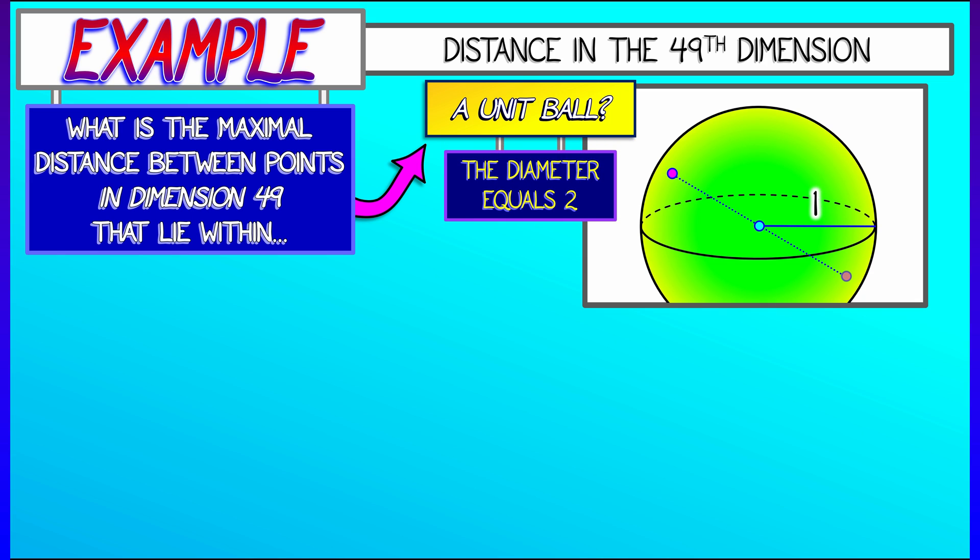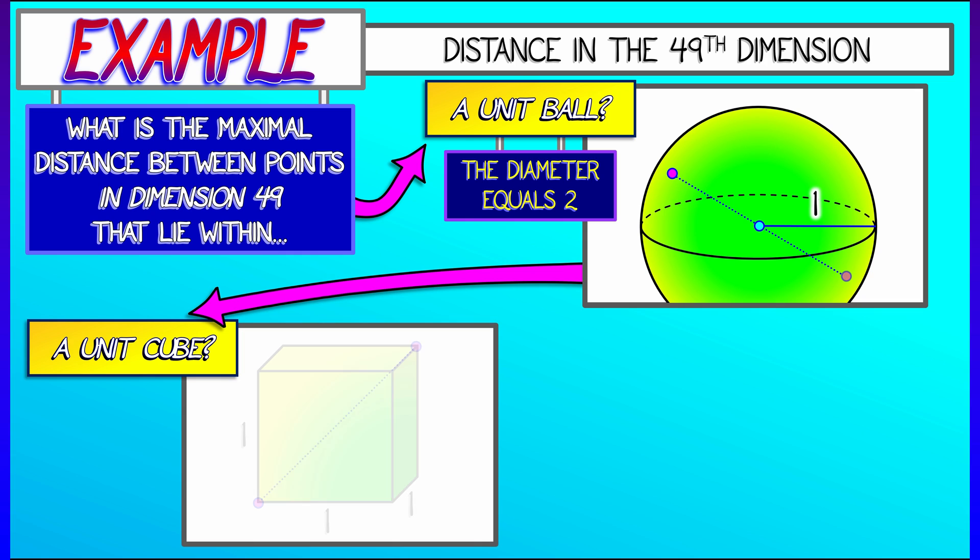In that, since all the points are within distance one of the origin, the diameter, the maximal distance you can get between two points is equal to two. That much should be intuitively clear. And that holds in any dimension, not just 3, not just 49.